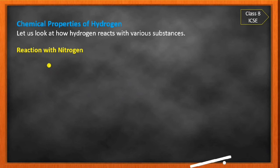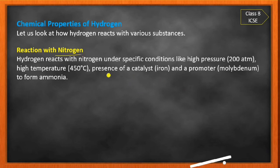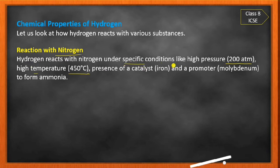Third, the reaction with nitrogen. Hydrogen reacts with nitrogen under specific conditions: high pressure of 200 atmospheric pressure, high temperature of 450 degrees Celsius, with iron acting as a catalyst. A catalyst is a substance which does not take part in the reaction but whose presence increases the rate of reaction.